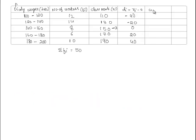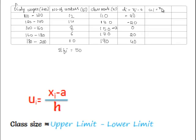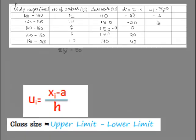We shall find ui is equal to xi minus A by h. As we know that A is equal to 150 and h is equal to 20, we can find ui. Here we get minus 2, minus 1, 0, 1, 2.